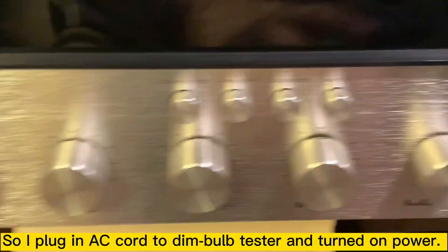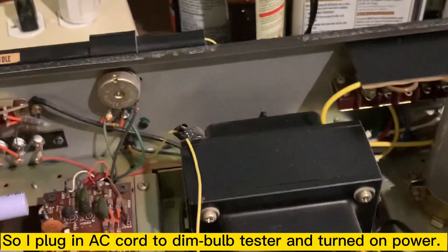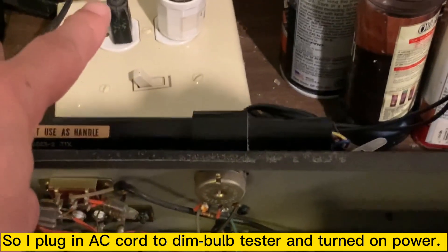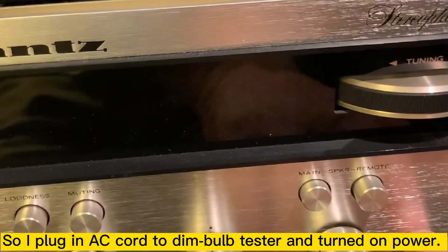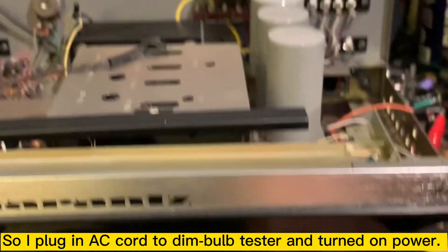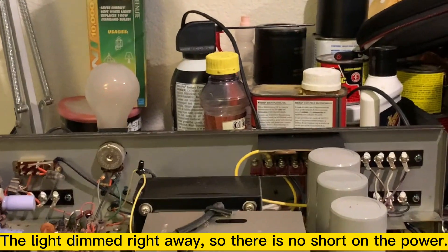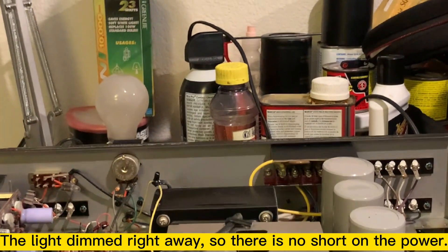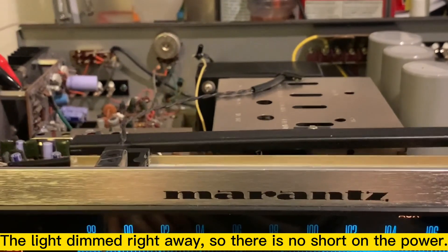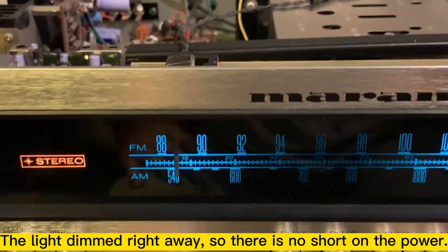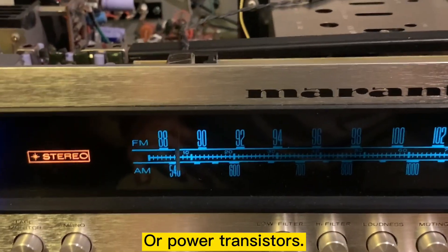So I hook up the AC cord to the dim bulb tester and then we can turn on the power. The light is dimmed, so there's no shortage on the power or power transistor.